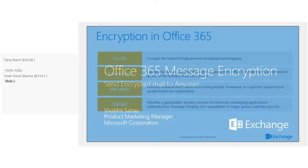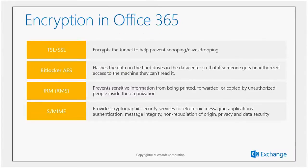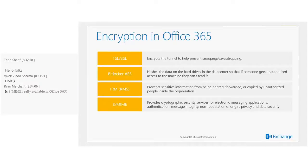Encryption in Office 365 is not a new term. There are already different encryption technologies available: standard transport TLS/SSL security which encrypts your tunnel information to prevent snooping or eavesdropping attacks; BitLocker encryption on Office 365 data centers to prevent unauthorized access; IRM (Information Rights Management), also known as Rights Management Services, which protects your documents and libraries using RMS templates; and finally S/MIME, which encrypts data with client certificates.